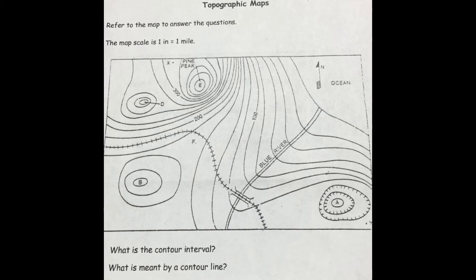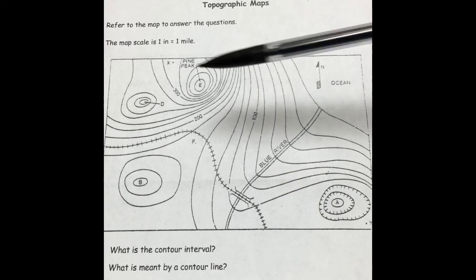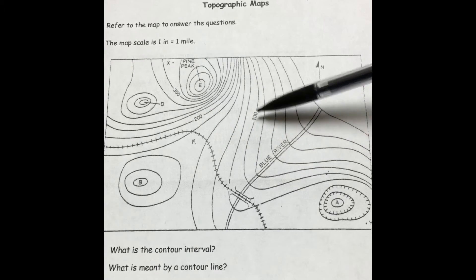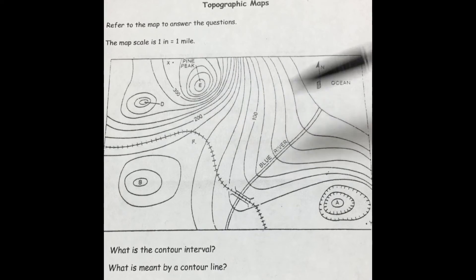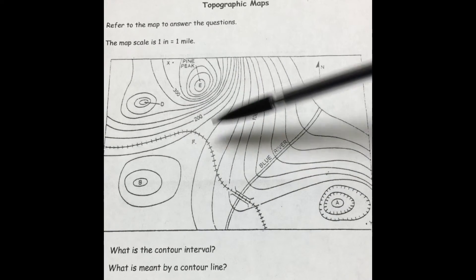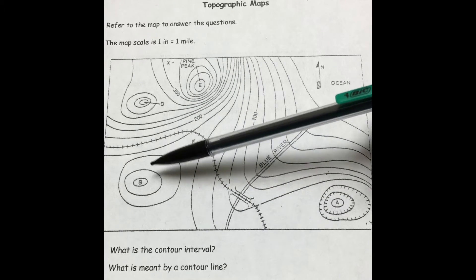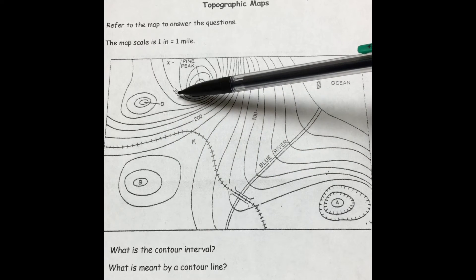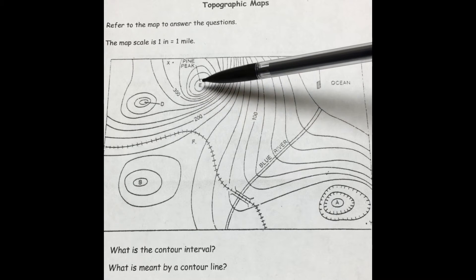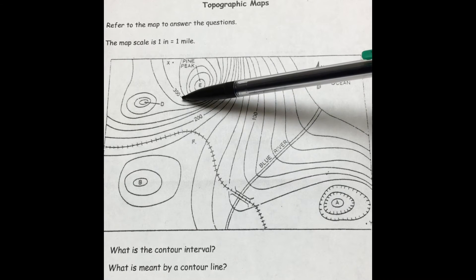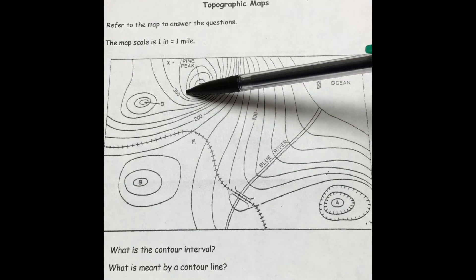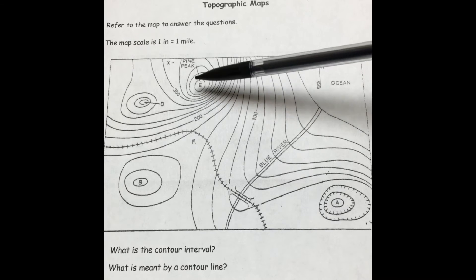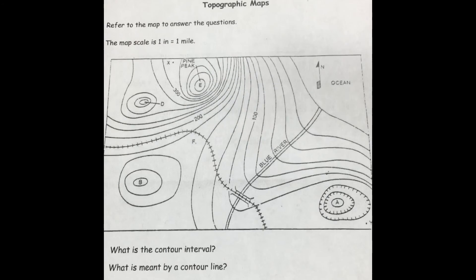What is the elevation of the highest possible point on the map? You'd look for the highest meter area. Up here is 300, and you can see it gradually increases from 100 through 180 to 200. Going up to Pine Peak, we count: 300, 320, 340, 360, 380. So 380 meters at Pine Peak is the highest possible point on the map.